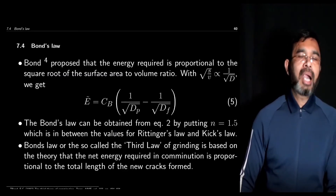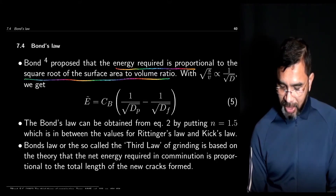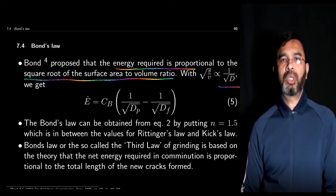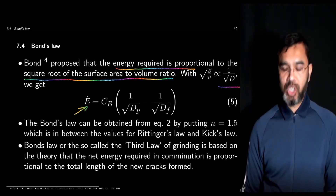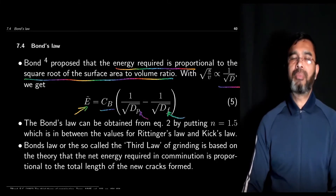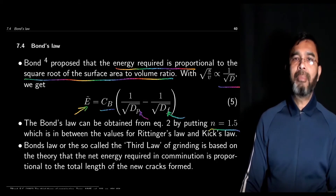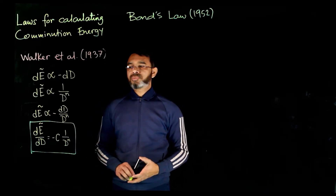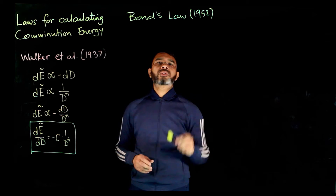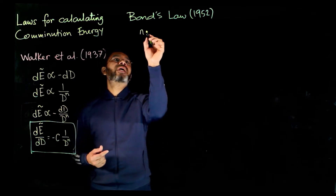The third law is Bond's law. Bond proposed that the energy required is proportional to the square root of the surface area to volume ratio. Since √(S/V) is proportional to 1/√d, the required energy is c_B times (1/√d_P minus 1/√d_F), where c_B is the constant for Bond's law. This Bond's law is obtained by putting n equals 1.5 in the general formulation. Note that the two laws — Rittinger's and Kick's — were proposed in the 1800s; Walker generalized them in 1937, and Bond proposed the third law in 1952.